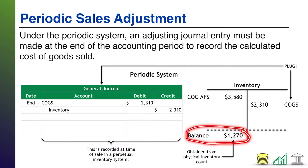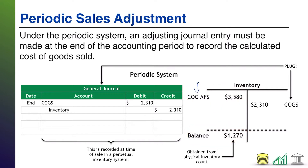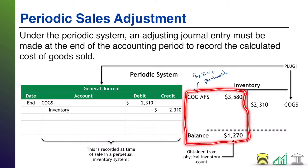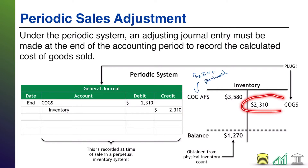From there, you compare that ending balance from the count to whatever you had available for sale. Cost of goods available for sale is the combination of your beginning inventory balance plus anything else you've purchased. Your beginning inventory balance in a periodic system came from last period's count — that was the ending balance for that period. You add whatever purchases you have to get your cost of goods available for sale. And the assumption is made that any difference between what you had available for sale and what your ending balance now is, was a cost of goods sold.